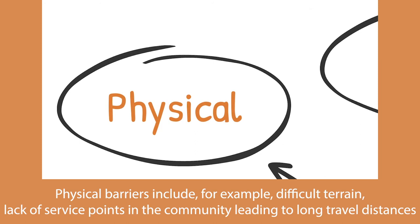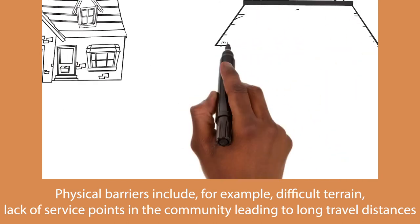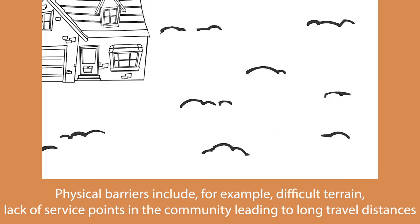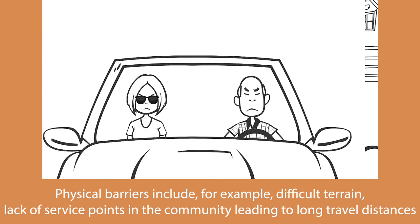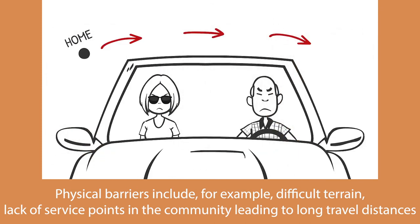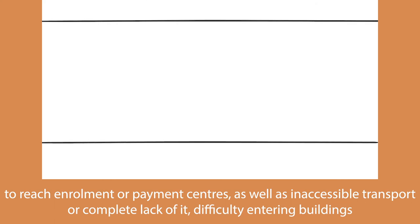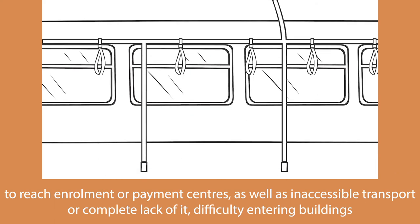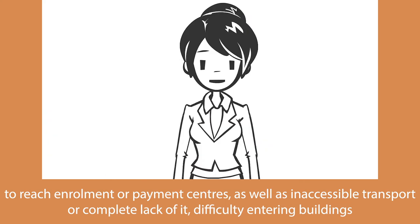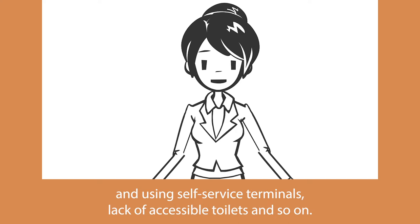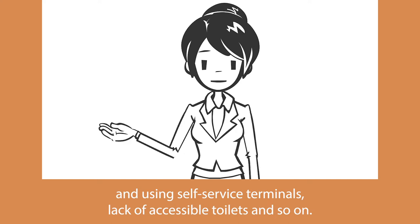Physical barriers include, for example, difficult terrain, lack of service points in the community, leading to long travel distances to reach enrollment or payment centers, as well as inaccessible transport or a complete lack of it, difficulty entering buildings and using self-service terminals, and lack of accessible toilets, etc.